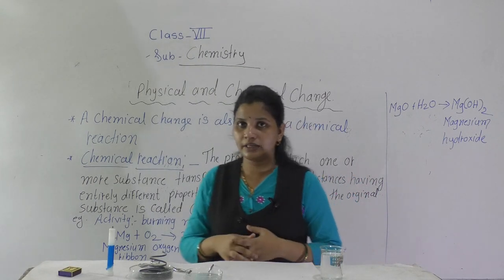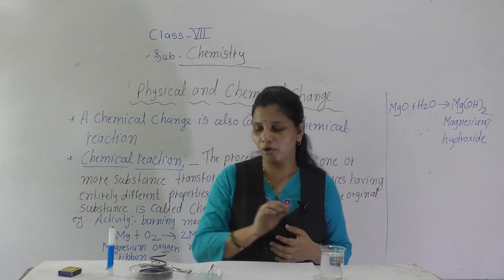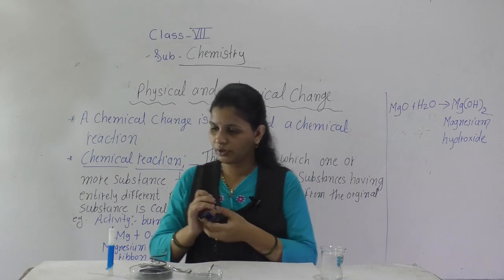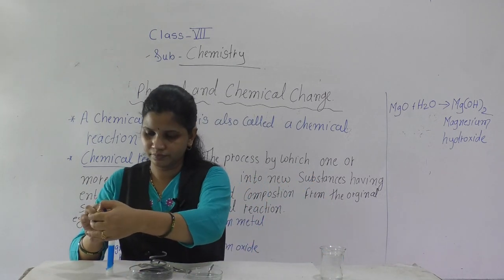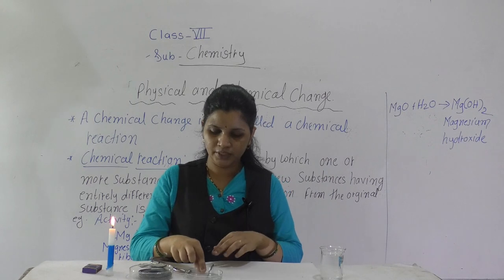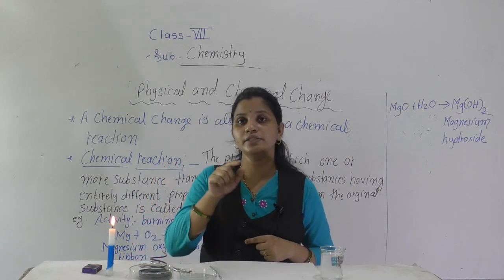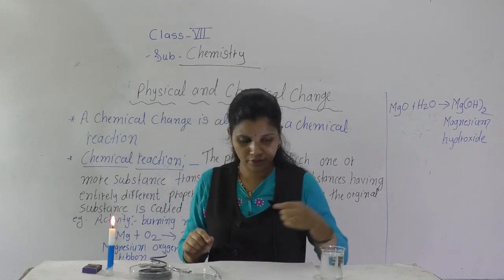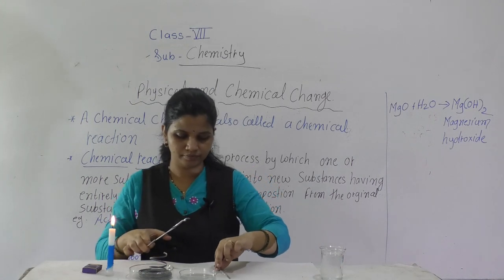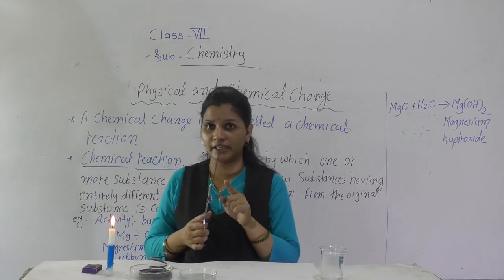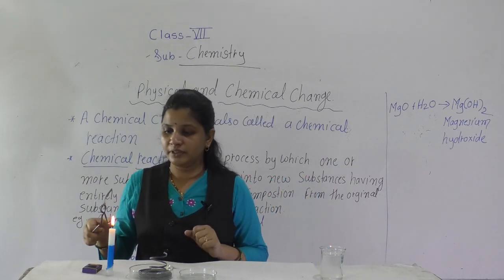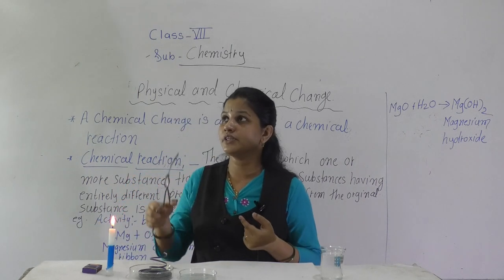Now we will perform the activity. For the activity, here we have one candle, one magnesium ribbon, a petri dish, and a beaker with water. This activity is given in your textbook — read the procedure there. When this magnesium metal starts burning, it will react with the oxygen present in the air and form a new substance.